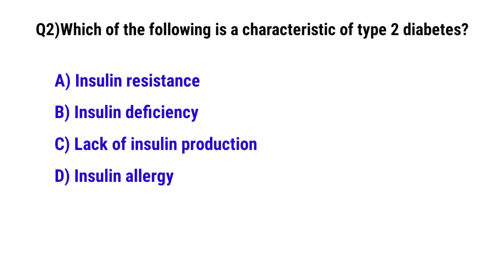Question No. 3: Which of the following is a characteristic of type 2 diabetes? The correct option is A: insulin resistance.